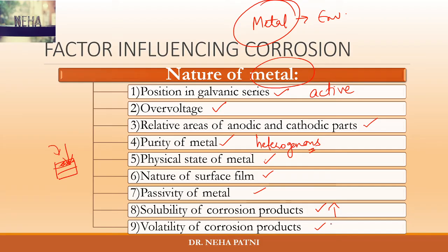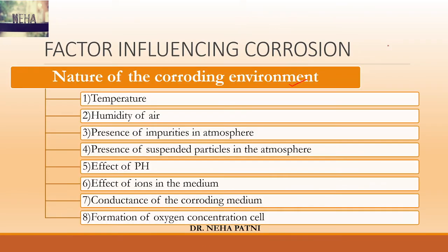The next factor is volatility of corrosion product. If the metallic surface compound formed is volatile, it volatilizes away and then fresh surface is available for attack. That fresh surface also gets corroded, it also volatilizes, and more fresh surface is available — so ultimately the metal gets corroded to the end. Volatility of corrosion product is therefore also a factor. That covers all the metal-related factors.